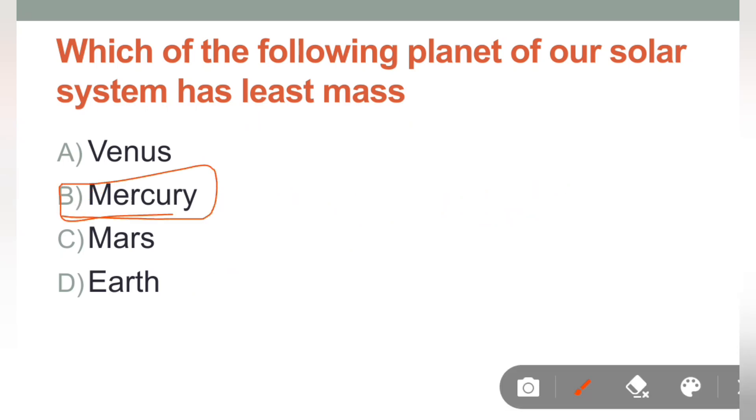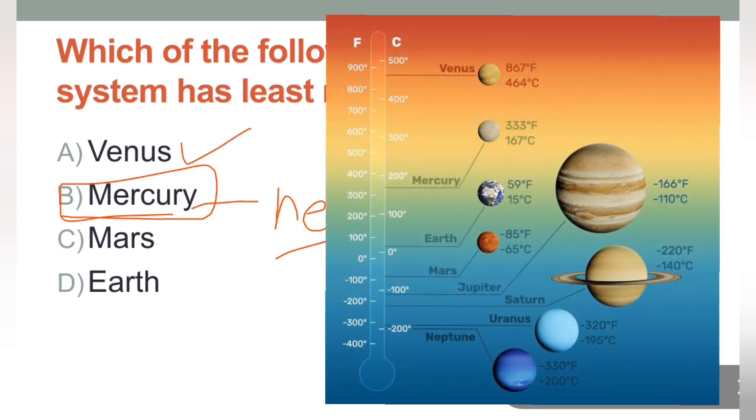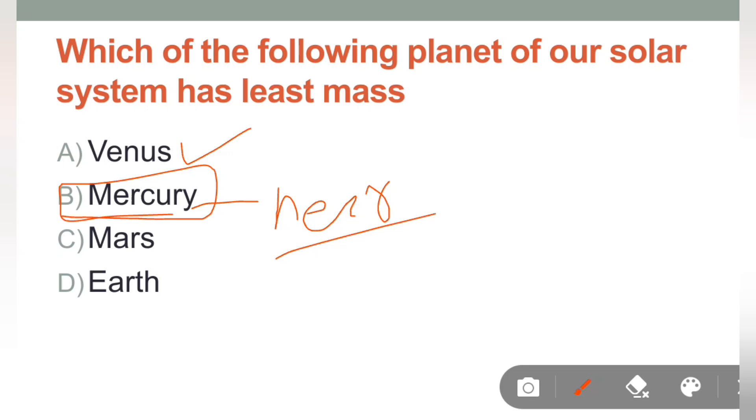Aur, agar aap se poocha jaye ki hottest planet kaun sa hai, toh woh kaun sa hai, Mercury? Nahi. Agar ye sun ke nearby hai, phir bhi ye hottest planet nahi hai, hottest planet is Venus. In the same way, coldest planet is not Neptune. Though it is the farthest planet from the sun. But, woh coldest planet nahi hai, coldest planet agar poocha jaye, toh that is Uranus. Jis ka discovery kis ne ki thi, William Herschel ne.